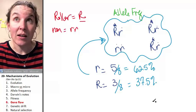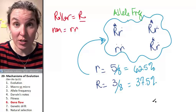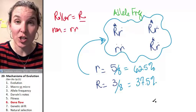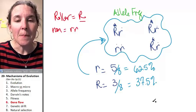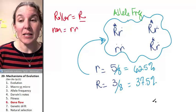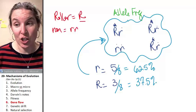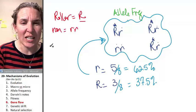It makes sense that selective pressures can change gene pools. The next concept is another way that we can change gene pools, and it's called gene flow.